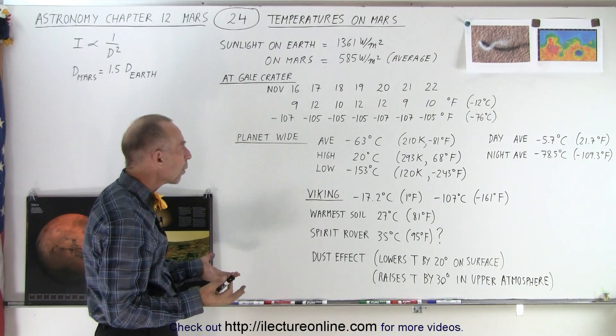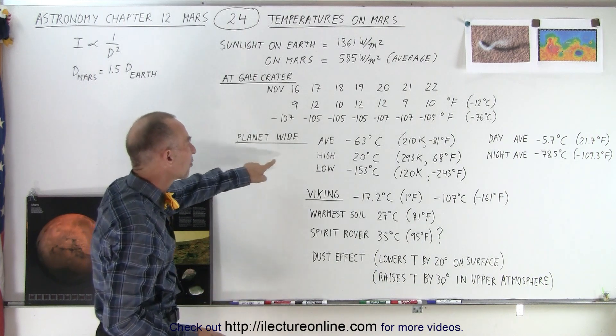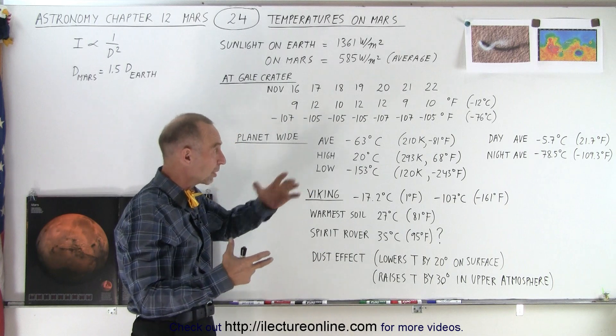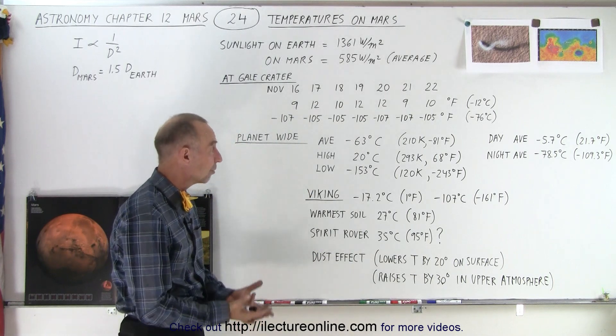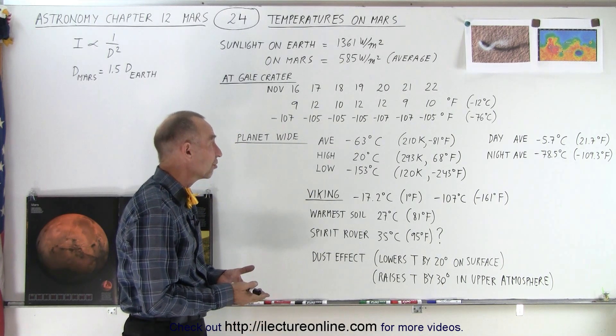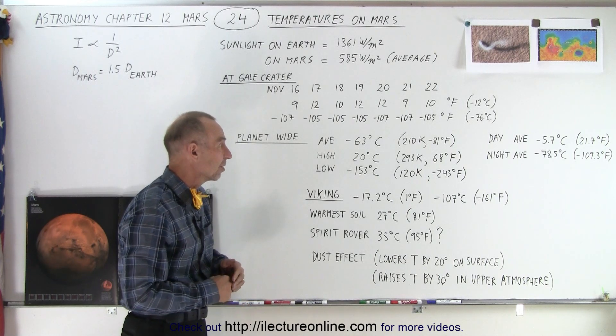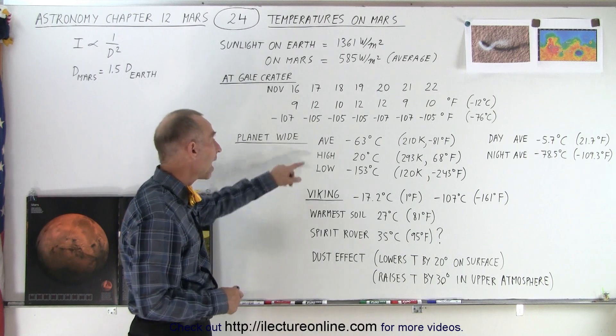Planet-wide, the average temperature is about minus 60 degrees centigrade—that's a combination of the north pole and the equator regions. Globally, on average, the temperatures are quite frigid, about minus 81 degrees Fahrenheit or minus 60 degrees Celsius.